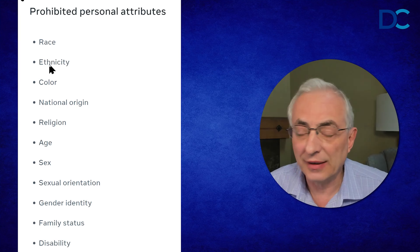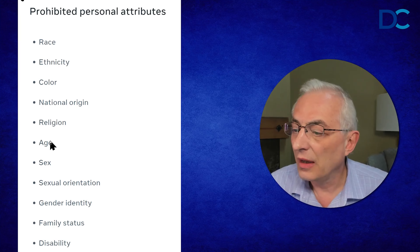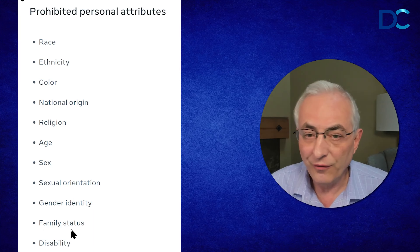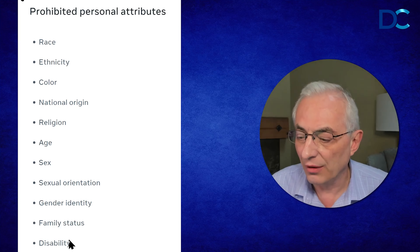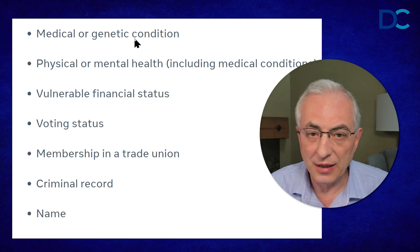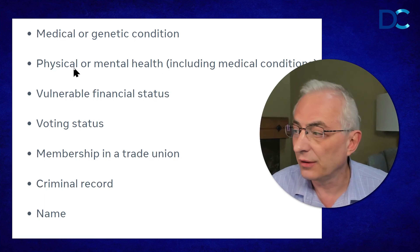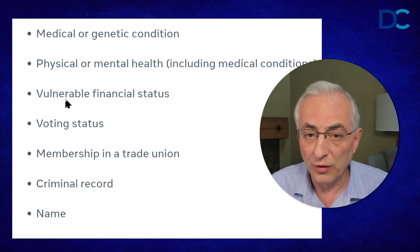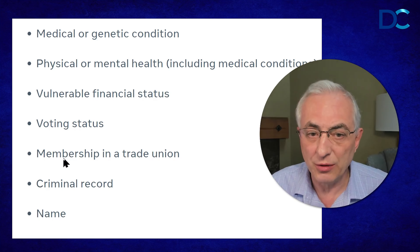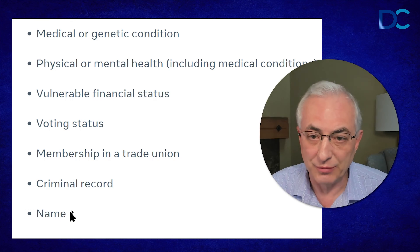The prohibited categories are: race, ethnicity, color, national origin, religion, age, sex, sexual orientation, gender identity, family status (so divorced, single), disability, medical or genetic condition, physical or mental health, vulnerable financial status, voting status, membership in a trade union, criminal record, and you can't use their name.